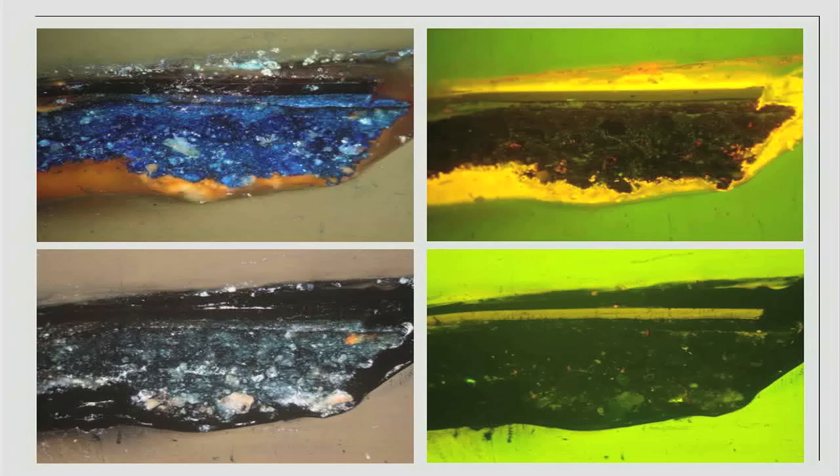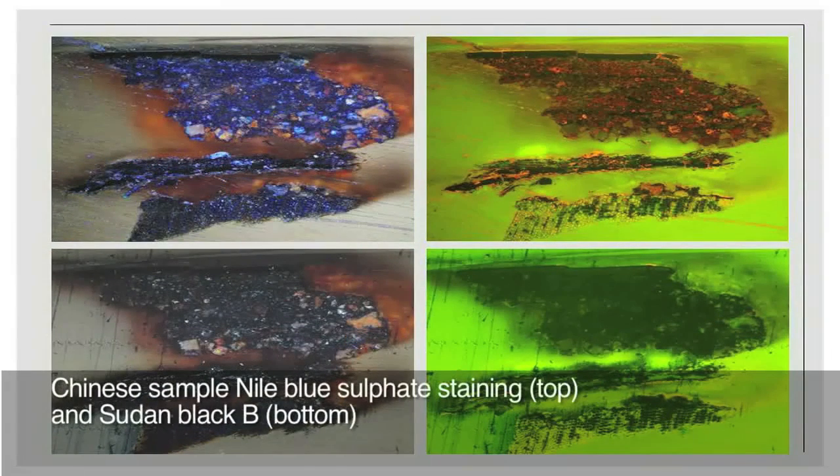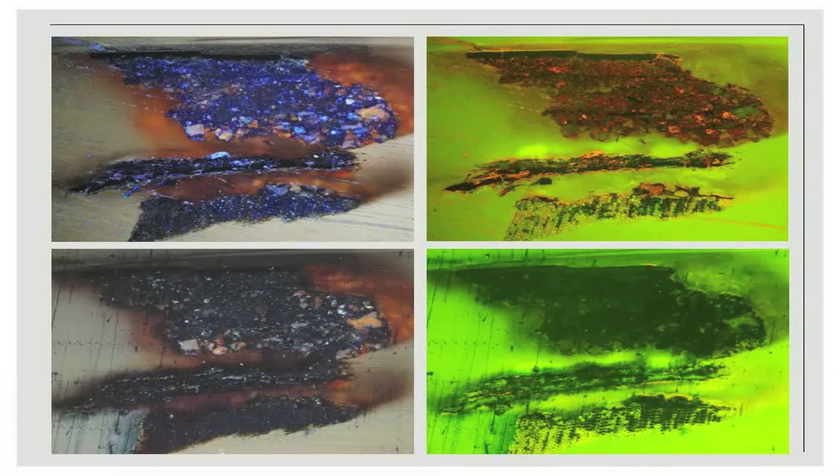Together with the negative staining results of the previous protein staining, it is suggested that the sample hence contains oil in the foundation layers, but no protein. In the Chinese lacquer sample, the Nile Blue staining showed also positive results, but here it may indicate the presence of both protein and oil. This is suggested by the previously performed Amido Black staining, which had given an indication for the presence of protein medium.